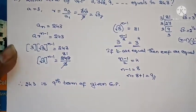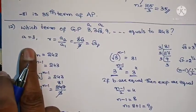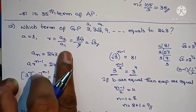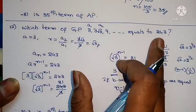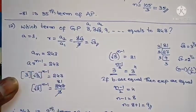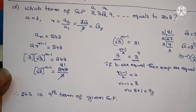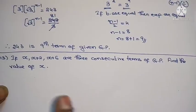So here you just need to write the a value and R as A2 by A1, then substitute the n value for 243. It's quite simple. Next one.